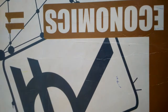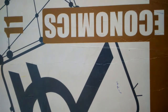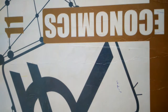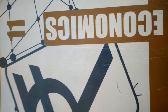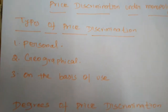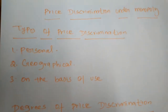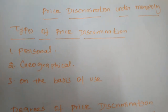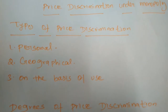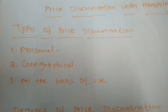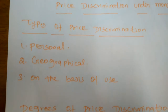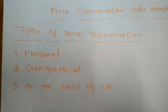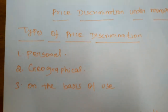Good morning students. Last day we studied about price discriminations under monopoly and the features of monopoly markets. Today we will remember what we studied and then move to new concepts. In the monopoly market, the monopolist has the power and rights to fix the price of their commodities, and with that power they can discriminate in the fixation of price.